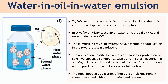The other type of multiple emulsion is water-in-oil-in-water emulsion. In water-in-oil-in-water emulsions, water is first dispersed in oil, and then this emulsion is dispersed in a second water phase.